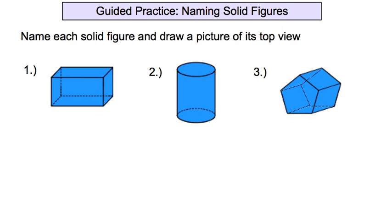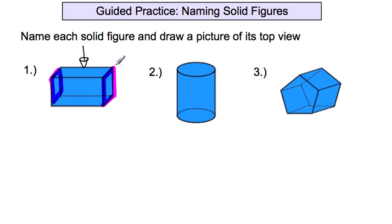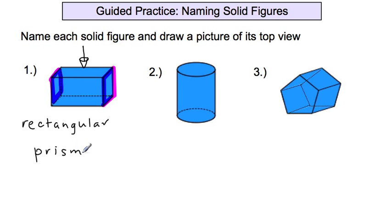Some guided practice now. We're going to be naming each solid figure and then drawing a picture of what it looks like from the top — picturing what it looks like if we were looking straight down on that figure. First, taking a look at this figure, we see that on the ends there are rectangles. It's got two of the same shapes on both ends and these parallel lines running from the corners, and so this is definitely a rectangular prism. Number two has circles on the top and the bottom, and then parallel lines running up the sides. And instead of calling it a circular prism, we call that a cylinder.